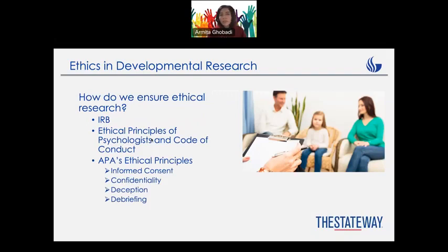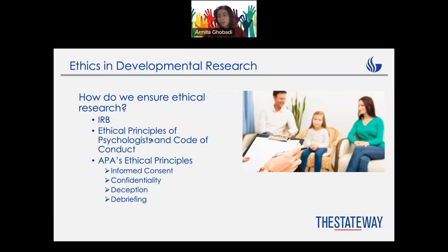How can we ensure everything is going to be all right? First of all, we have the IRB, or Institutional Review Board. The IRB is a system in every university or research team that can monitor every aspect of our research design. For example, it can look at your design and say that injections are not allowed for children, or that you have deception in your study — that you're lying to your participants — and it's not allowed. They literally supervise every step in your research, and it's a good system to make sure everything is ethical.